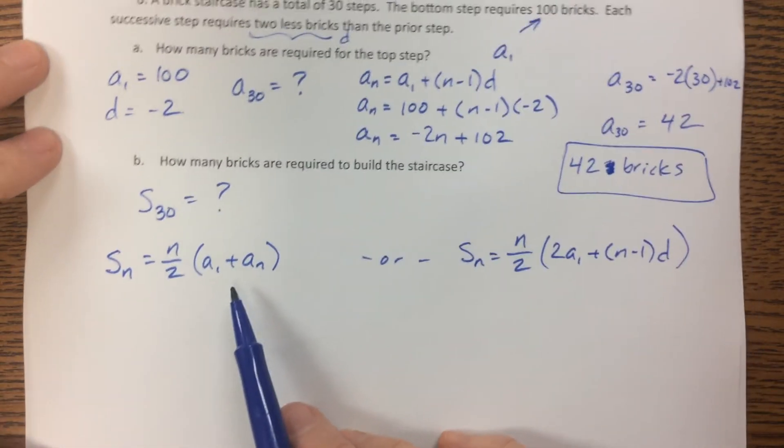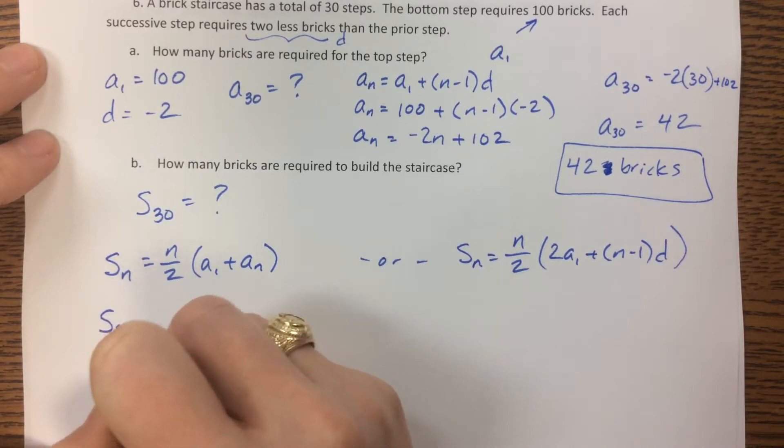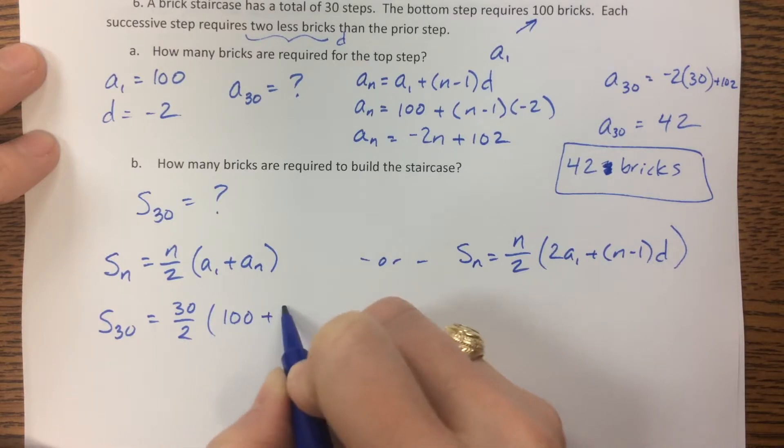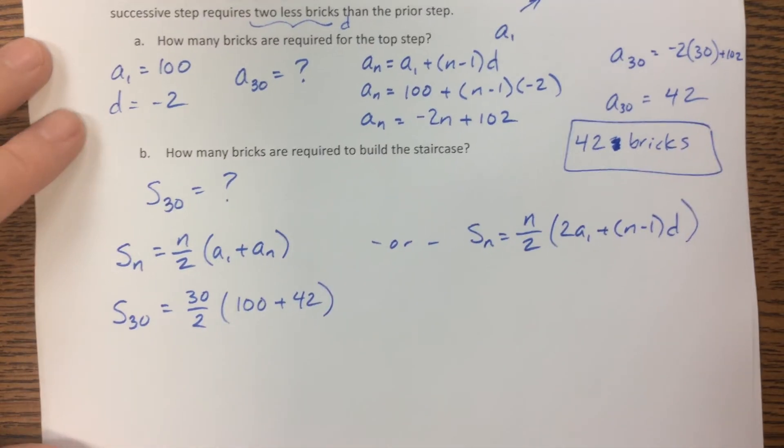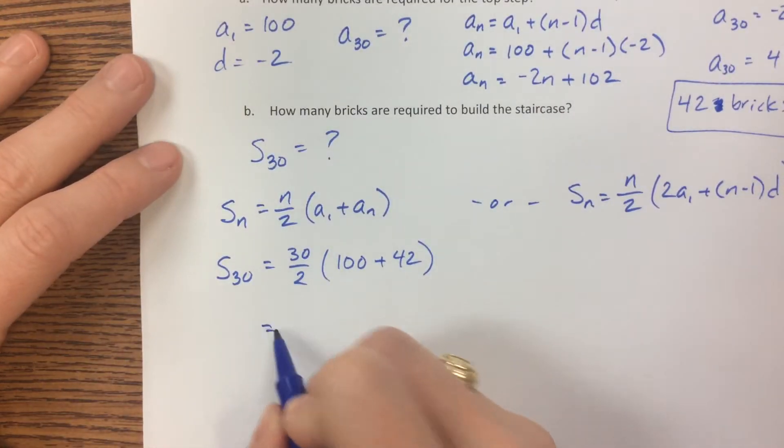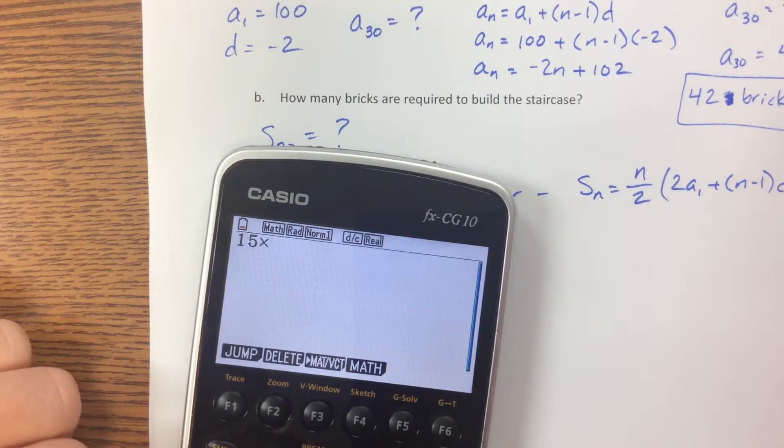So since we know a sub n is 42, this one might be pretty straightforward. The first step had 100. The 30th step had 42. I could also use the other one, but this becomes, well, 15 times 142.